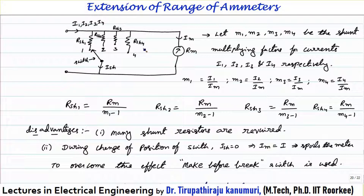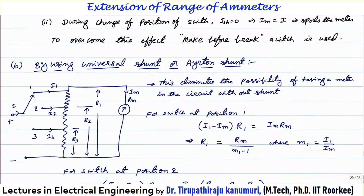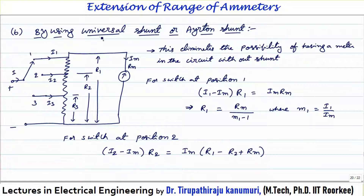A disadvantage of the multi-shunt approach is that multiple resistors are required. Additionally, when changing switch positions, for the brief moment the switch is open, all current passes through the meter and can damage it. To avoid this, a make-before-break switch is used: it connects to the new position before disconnecting from the old one, so a shunt is always across the meter.